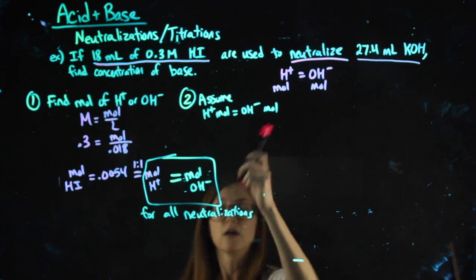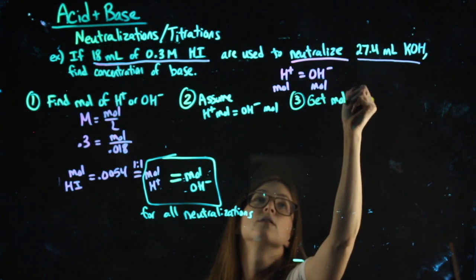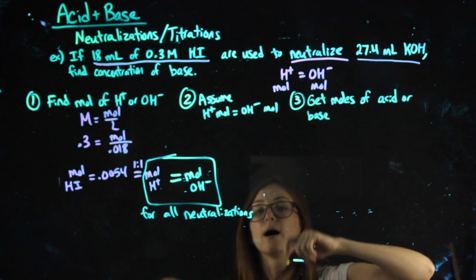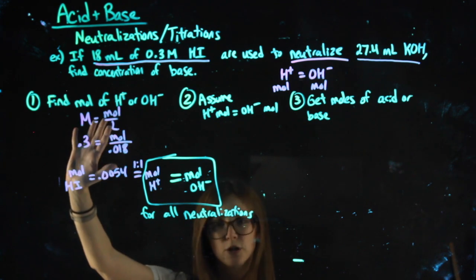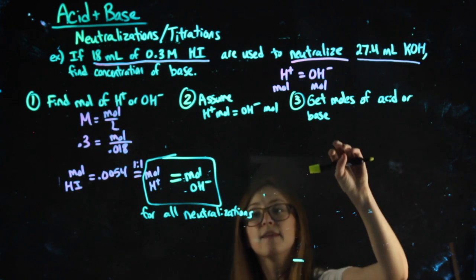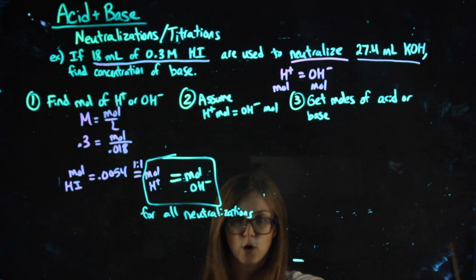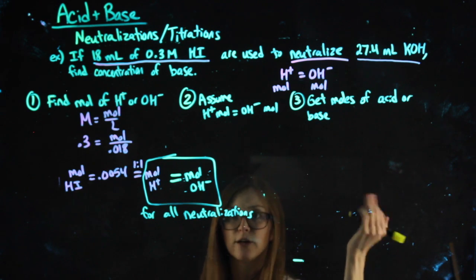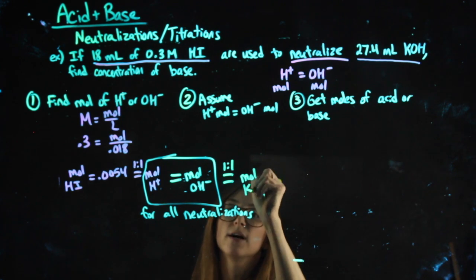So now, our next step will be to get the moles of acid or of the base. Really, whichever one we didn't have before is what we want to find. So, we already knew everything there was to know about our acid. We had its molarity and moles, or its molarity and liters, we found its moles. In this particular problem, we don't know or have a way of finding my moles of base other than from my moles of OH-. So, KOH to OH-, that's a one-to-one ratio. So again, because of a one-to-one ratio, step three here, this must equal my moles of KOH.